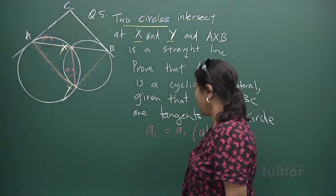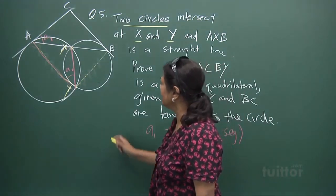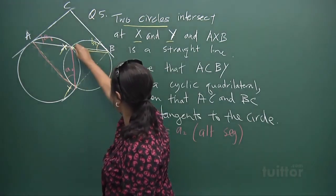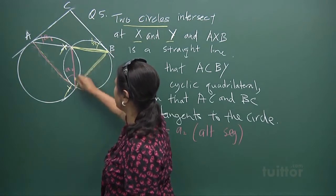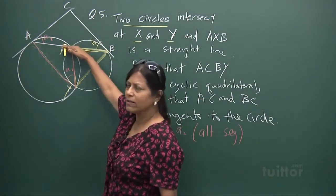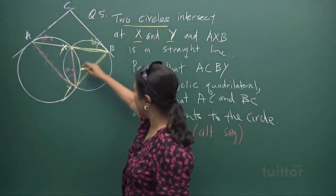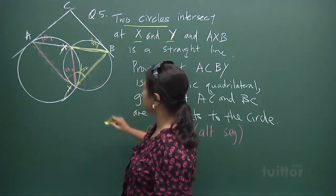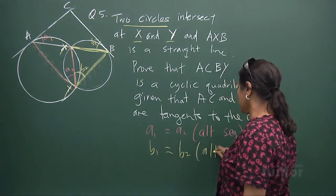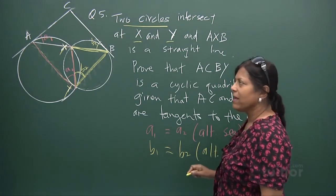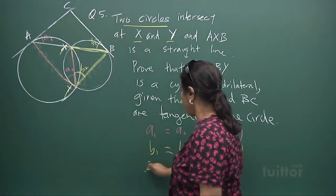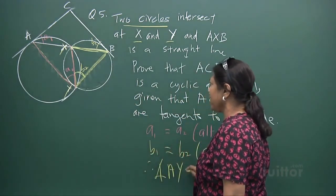Now we look at angle B. You are B1, and we look at this line here — a tangent, a chord, and the angles made. B1 will be equal to B2. So B1 equals B2. What's your reason? Alternate segment theorem. Excellent.